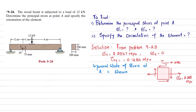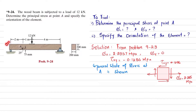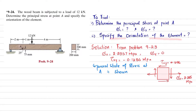Welcome back. Problem 9-24: the wooden beam is subjected to a load of 12 kN. Determine the principal stress at point A and specify the orientation of the element. You can see this is the beam given in example problem 9-23. There is a load of 12 kN, and the grains of the wood are oriented at 25 degrees from the horizontal. You have to find the principal stress at point A, which is sigma 1 and sigma 2, and specify the orientation of these principal stresses on the element.